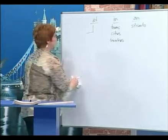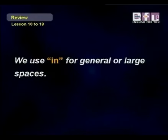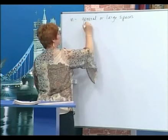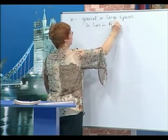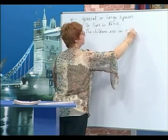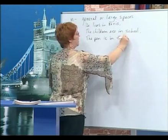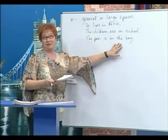Now let's look at some examples of sentences with these prepositions. We're going to do in first. In is for general or large spaces. Here are some examples: He lives in Paris. The children are in school — this is a place. The pen is in the bag. The pen is small and the bag is big — in the bag.